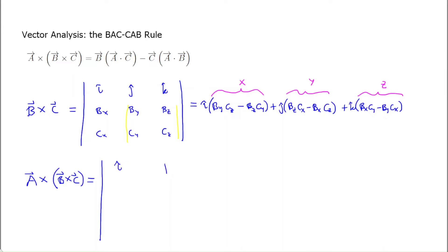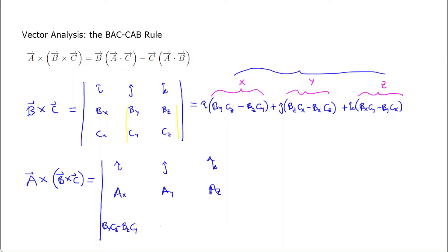Let's set up a determinant for A cross (B cross C). In the second row I have the components of A: A_x, A_y, A_z. In the third row I write the components of B cross C: (B_y C_z − B_z C_y), then (B_z C_x − B_x C_z), and finally (B_x C_y − B_y C_x). Now let's just pick on the x component of this product.